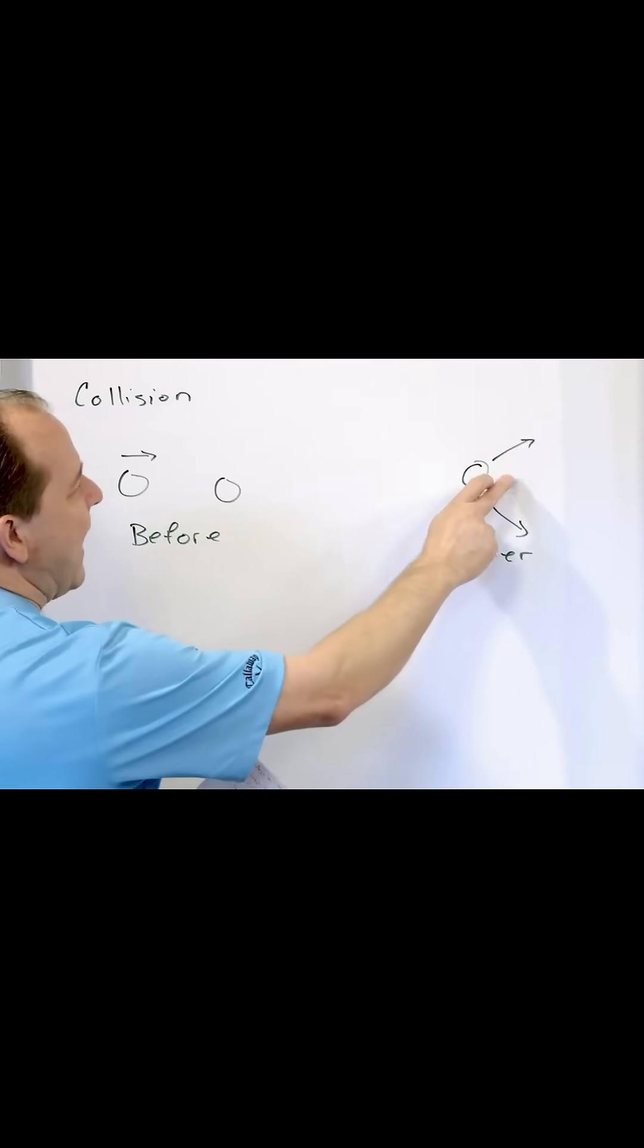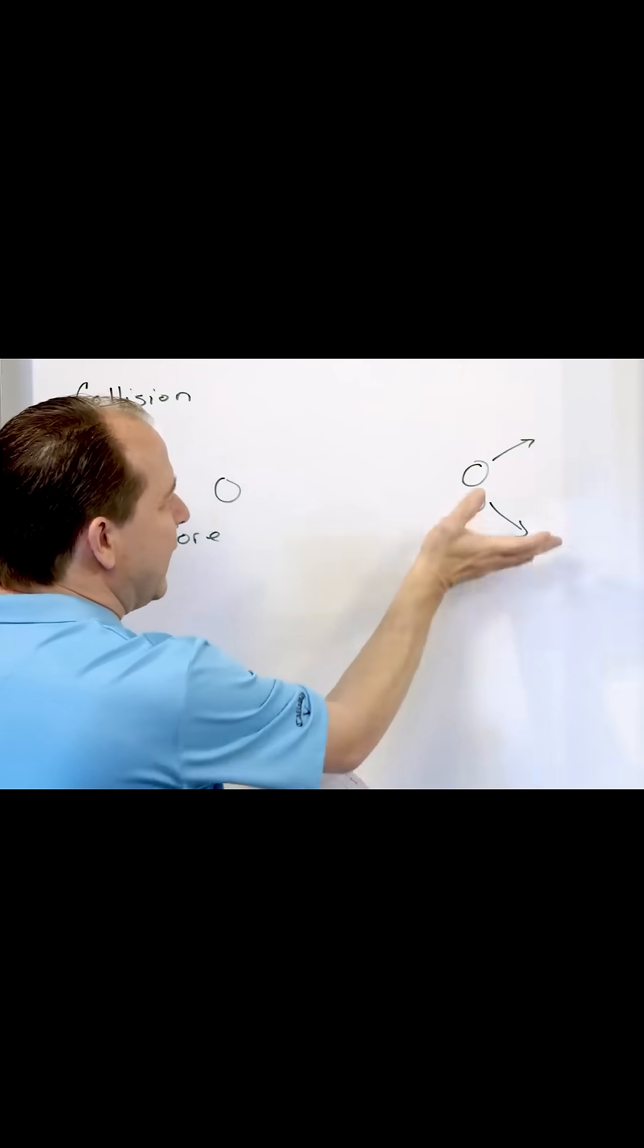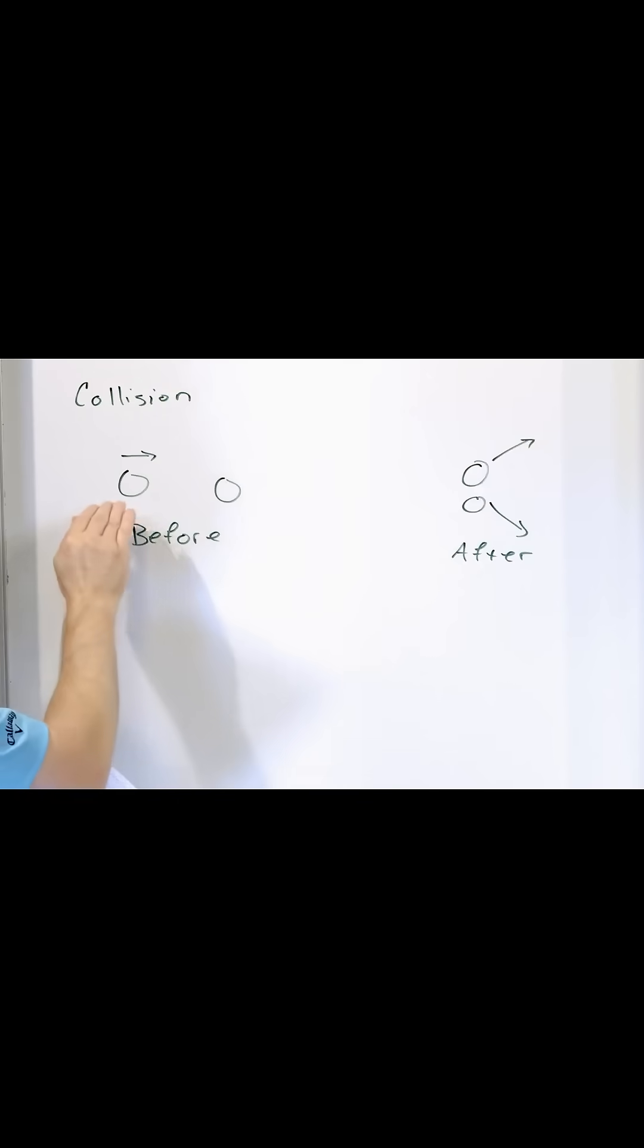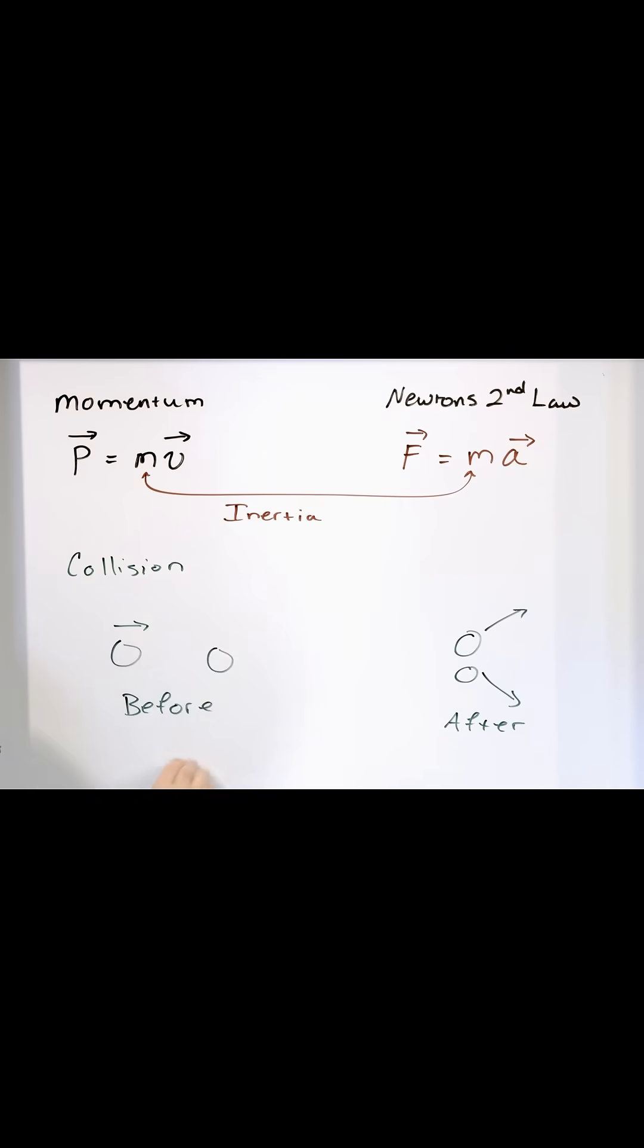So you can calculate how this thing is going to fly off, at what angle and all that stuff, based on knowing exactly what happens before. Because the momentum of the whole system here before and after has to be the same.